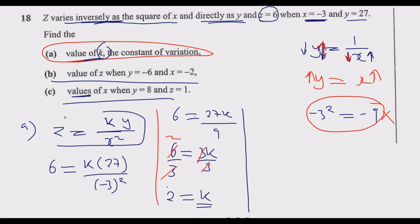Having found k, substitute into the equation: z equals 2y over x squared. We're looking for z. The value of y is negative 6, and we watch out for negatives.